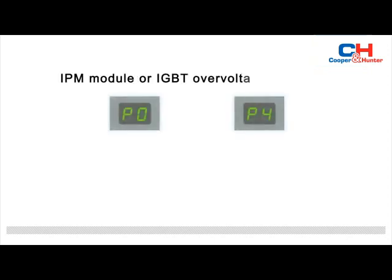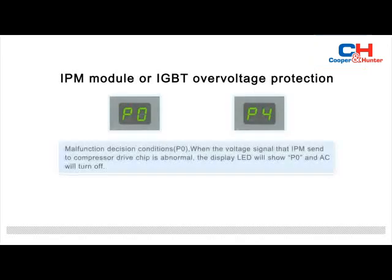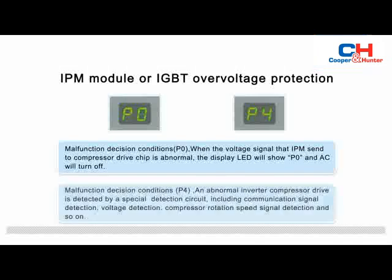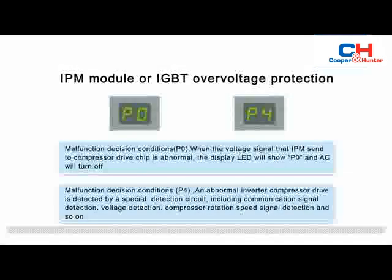When the indoor unit displays P0 or P4, that indicates an IPM module fault or IGBT overvoltage protection.